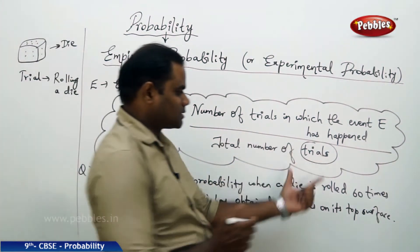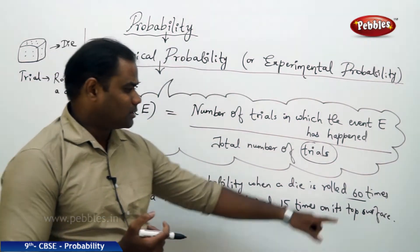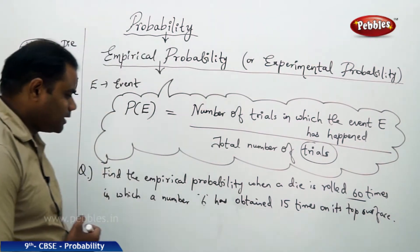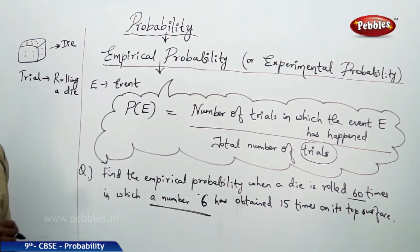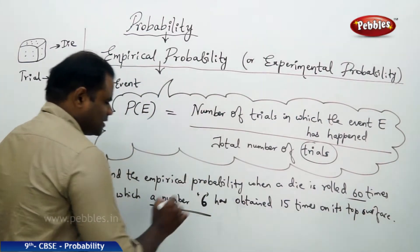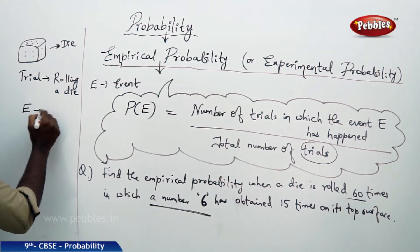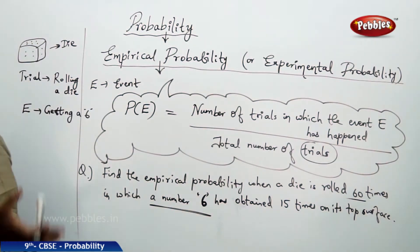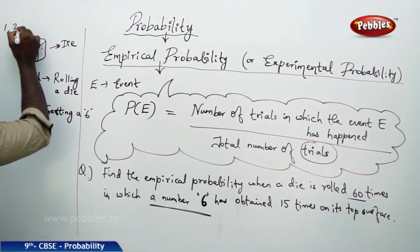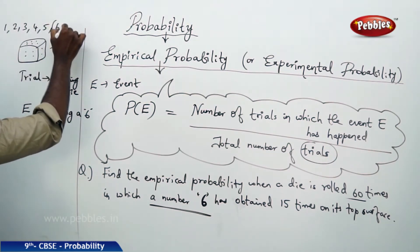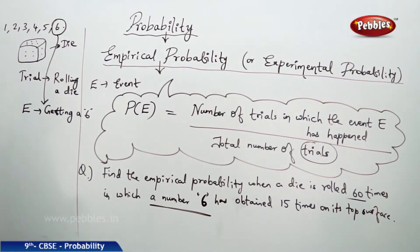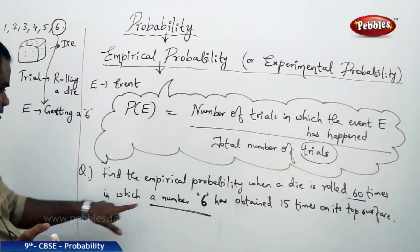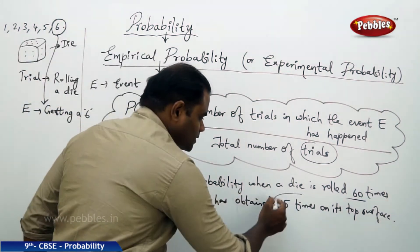I have the total number of trials which is 60, because a die is on the whole rolled 60 times. Now, the number of trials in which the event E has happened: the event E is getting a number 6. Clearly the question says getting a number 6, so my event E is getting a number 6 on the top surface. When I roll a die I can get any number between 1, 2, 3, 4, 5, and 6. But to get a number 6 on the top surface is the event. The experiment has revealed that a number 6 has obtained 15 times on its top surface.